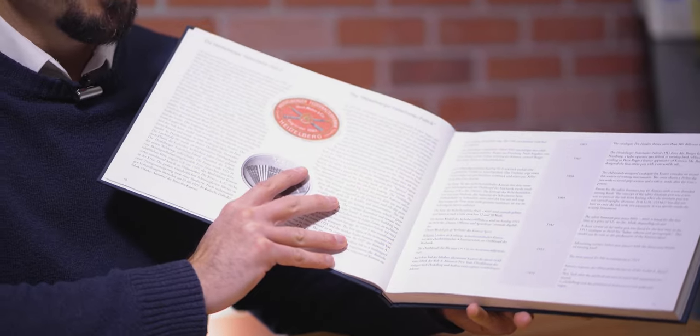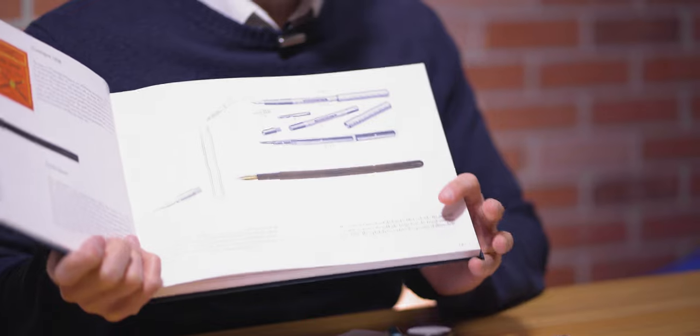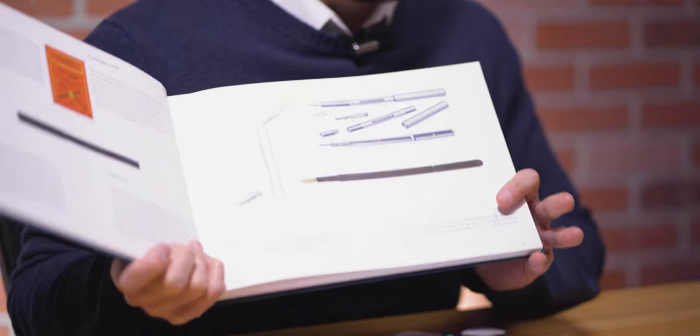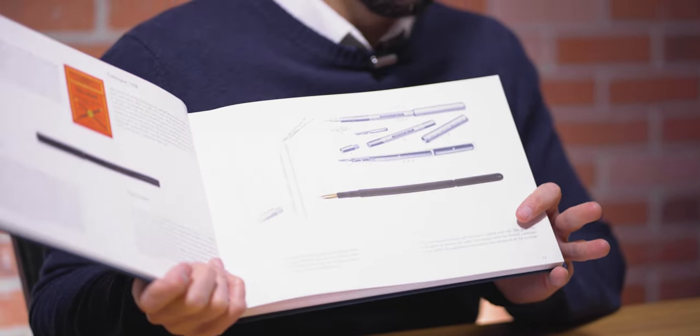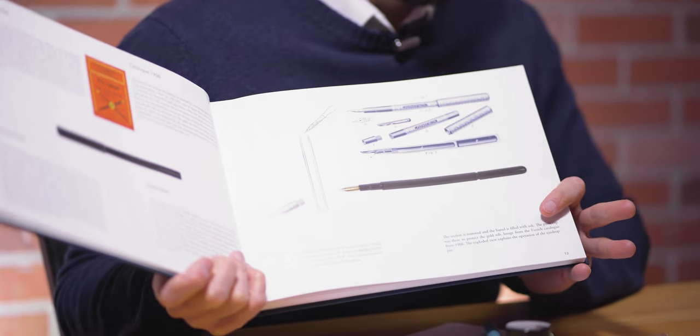Kaweco has a long history starting in 1883 when it was originally known as the Heidelberg dip pen factory. One of Kaweco's earliest models was the eyedropper filling Perkeo. Featured in the 1908 catalog, the fountain pen was made of ebonite with a gold iridium tipped nib.